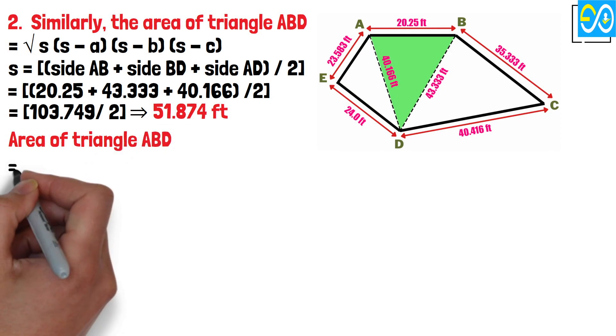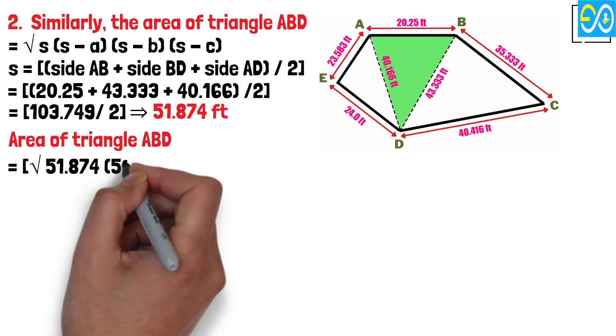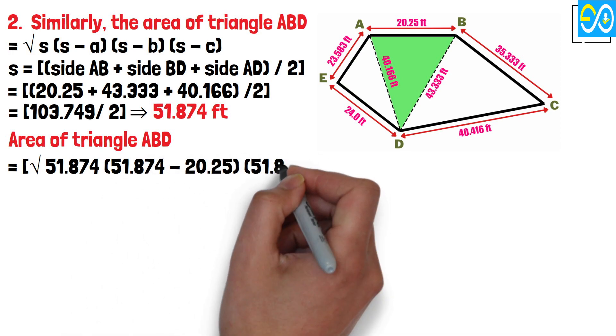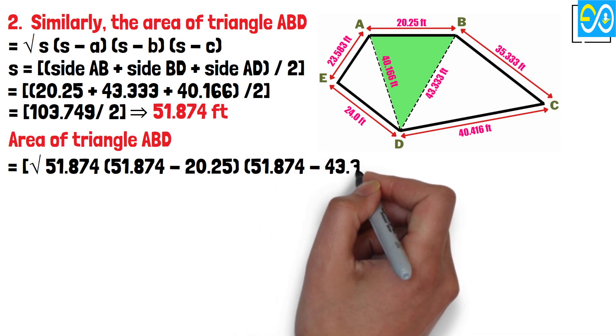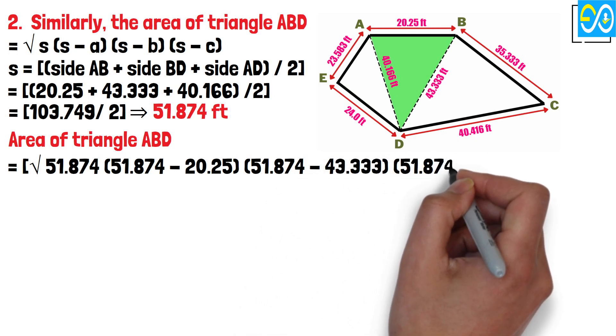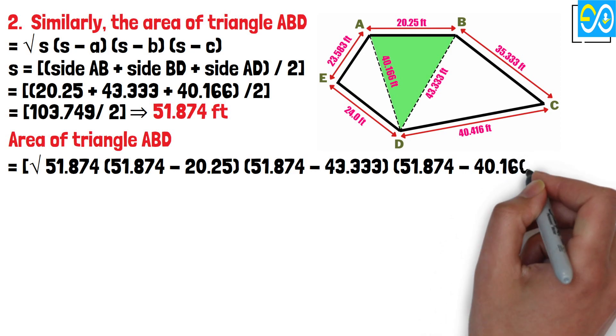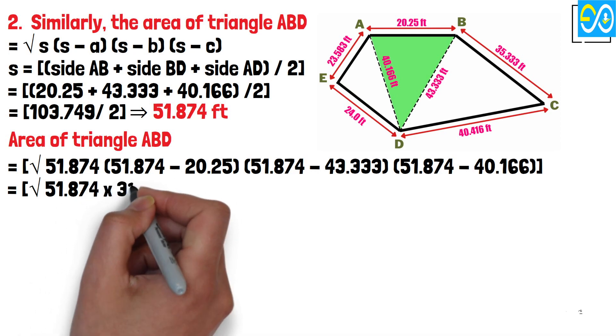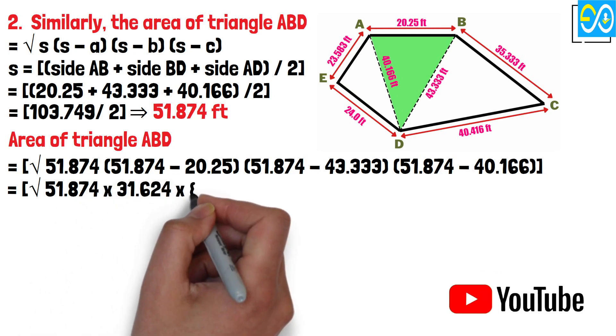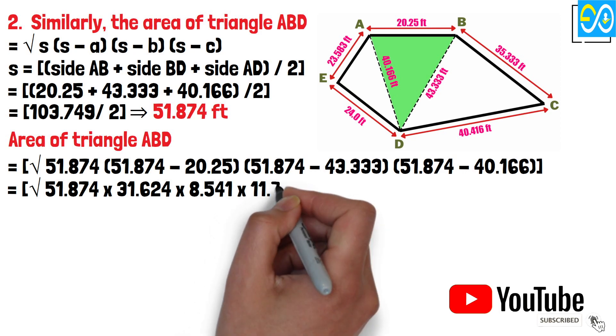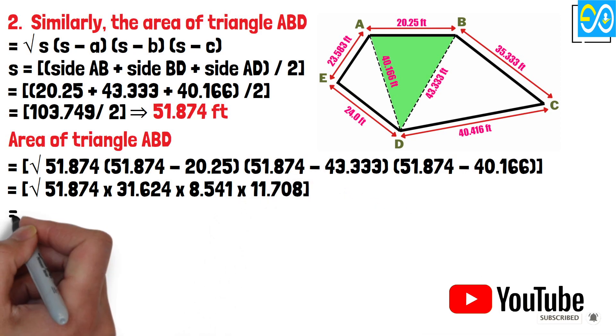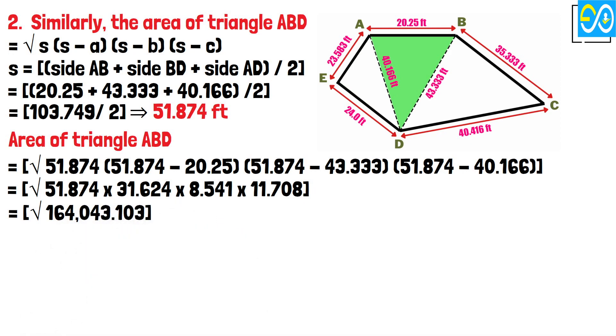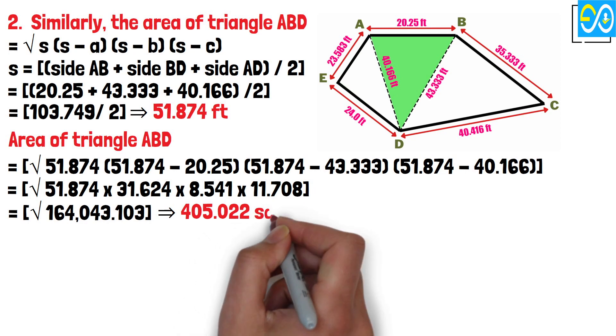Area of triangle ABD equals square root 51.874 times (51.874 minus 20.25) times (51.874 minus 43.333) times (51.874 minus 40.166). Equals square root 51.874 times 31.624 times 8.541 times 11.70. Equals square root 164,043.103 equals 405.022 square feet.